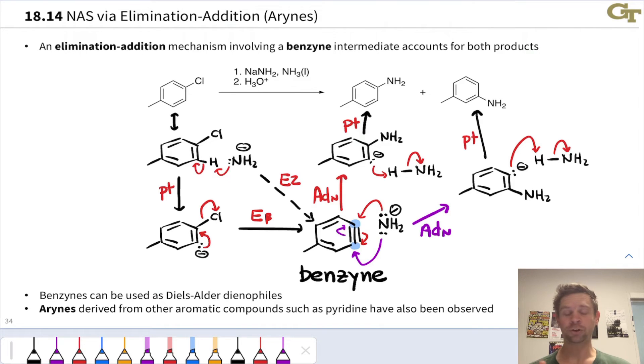Benzynes can be used as Diels-Alder dienophiles via their triple bond, and we end up with benzene-fused cyclohexene or cyclohexadiene products. And arines derived from other aromatic compounds can also be made. Pyridines in particular containing a carbon-carbon triple bond within a pyridine ring have been observed.